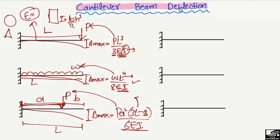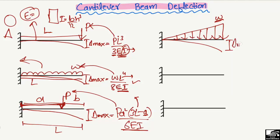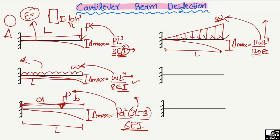The fourth case is when a triangular or uniformly varying load acts on the beam. This load is not uniform — it varies along the length. The maximum deflection again occurs at the free end and is equal to 11WL⁴ divided by 120EI, where W is the magnitude of the uniformly varying load, L is the total length of the beam, 11/120 is a constant, and EI is the material and geometric property of the beam.